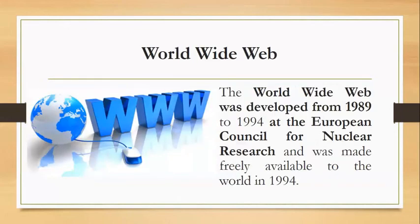After the internet, we have the Worldwide Web. The Worldwide Web, commonly known as the Web, is an information system where documents and other web resources are identified by URL, or Uniform Resource Locators. It was developed from 1989 to 1994 at the European Council for Nuclear Research. The Worldwide Web was made freely available to the world in 1994.